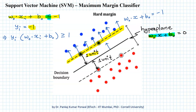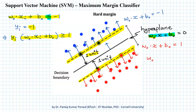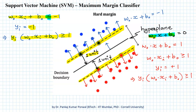Multiplying both sides of the inequality by minus one reverses the sign, giving yi times (w₀ dot xi plus b₀) greater than or equal to one. Similarly, the boundary hyperplane to the red class — being on the positive side — has equation w₀ dot x plus b₀ equals one. For all points on this boundary and beyond, w₀ dot xi plus b₀ is greater than or equal to one. Assigning label plus one to the red class, the product yi times (w₀ dot xi plus b₀) is greater than or equal to one for the red class as well.